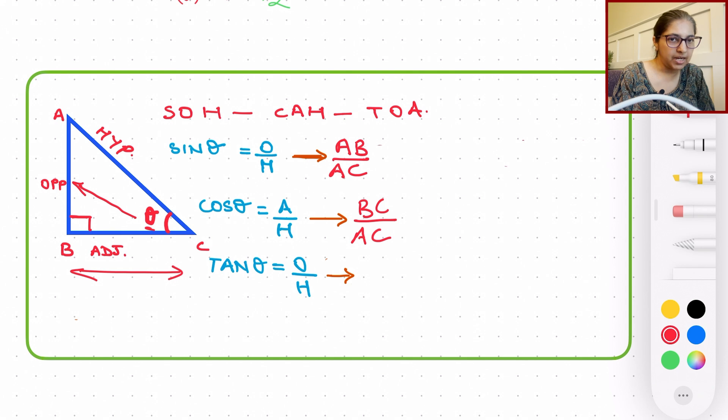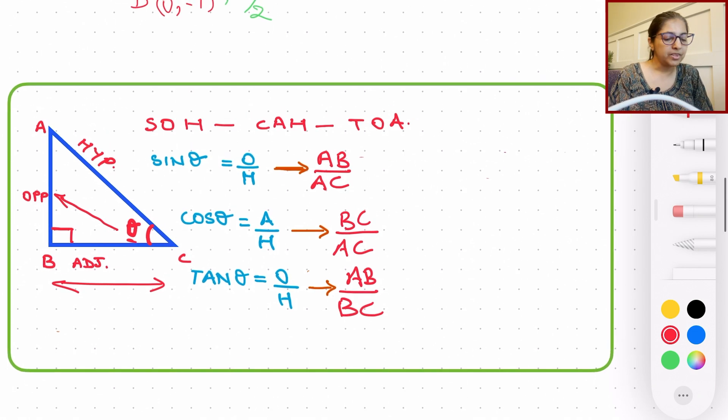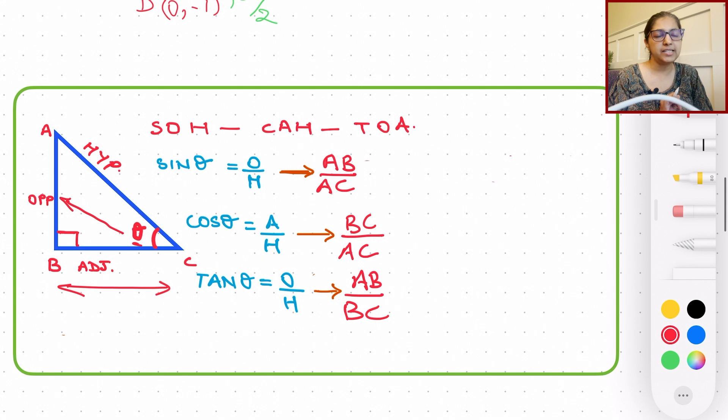And tangent of theta, again with reference to theta as an angle, it is going to be opposite, which is AB divided by BC. Now, this is it for the baseline sine, cosine, and tangent.